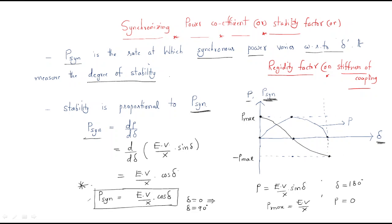Observe that the maximum power follows the sinδ curve and the synchronizing power follows the cosδ curve. The power formula is (EV/X)·sinδ and the synchronizing power coefficient is (EV/X)·cosδ — this is the relation between power and the synchronizing power coefficient.